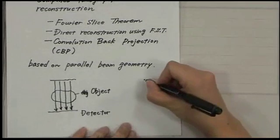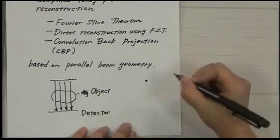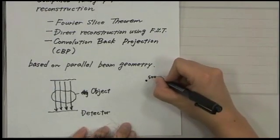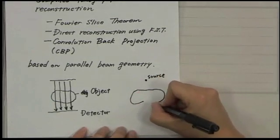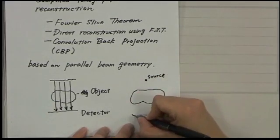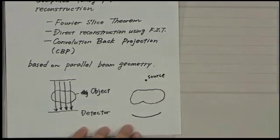And on the other hand, fan beam is a one, there's a source, there's an object, and then this is a detector.